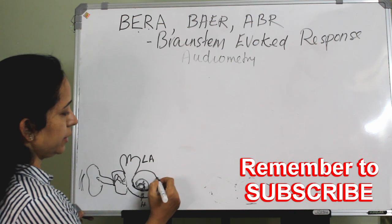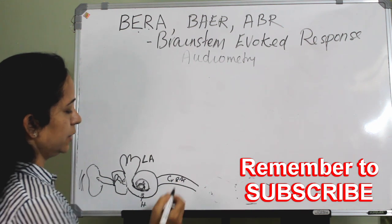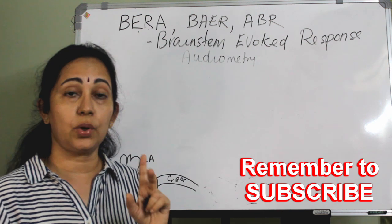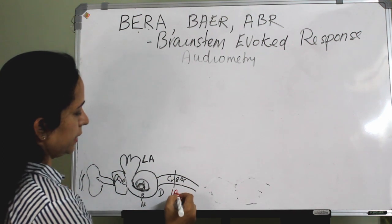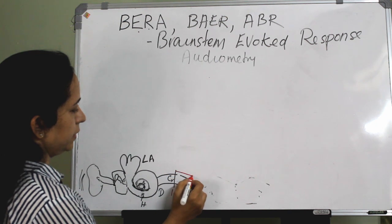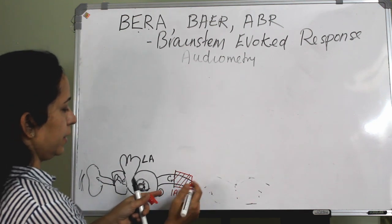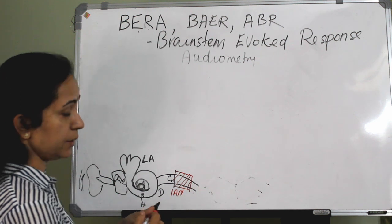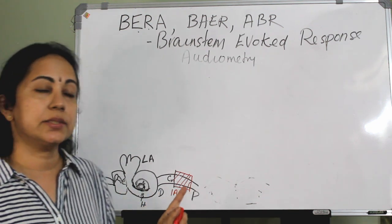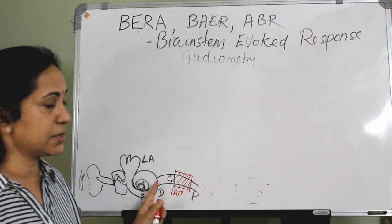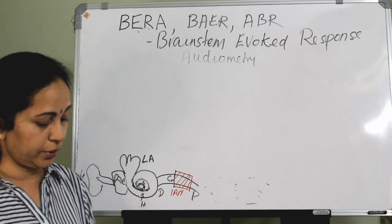From the cochlea, there is the cochlear nerve, or eighth cranial nerve. The eighth cranial nerve has two portions: a distal portion up to the internal acoustic meatus, and from the internal acoustic meatus up to the medulla it becomes the proximal part. The electrical impulses travel through the eighth nerve or auditory nerve to reach the central auditory connections.